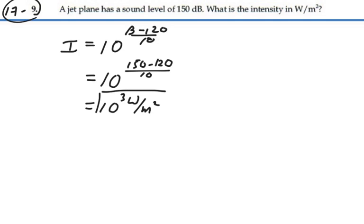So the intensity that corresponds to 150 decibels is 1,000 watts per meter squared.